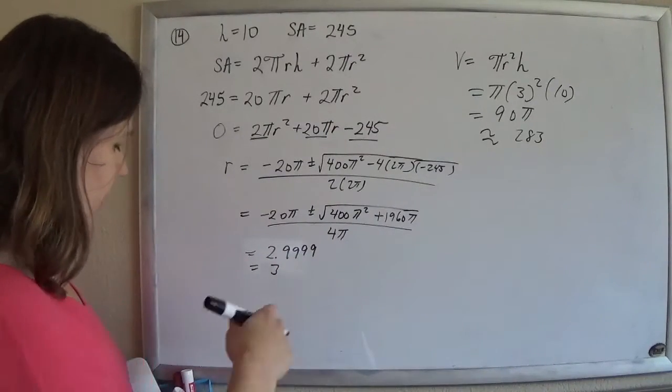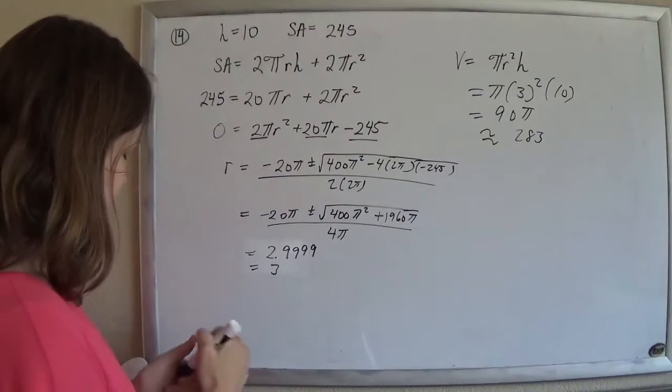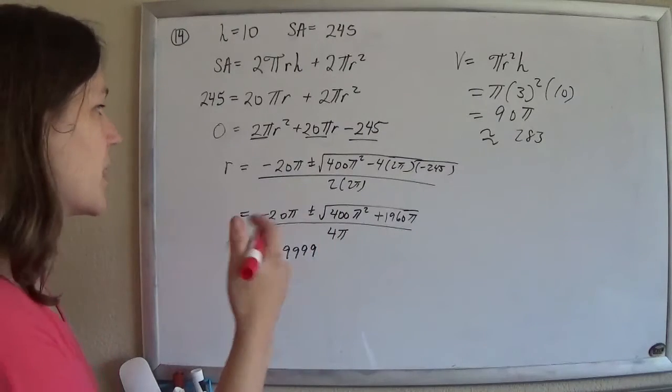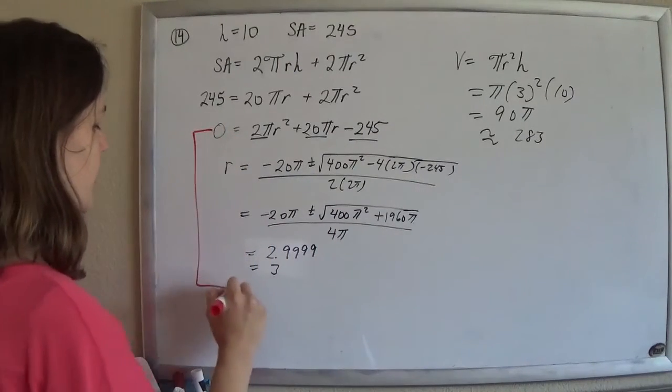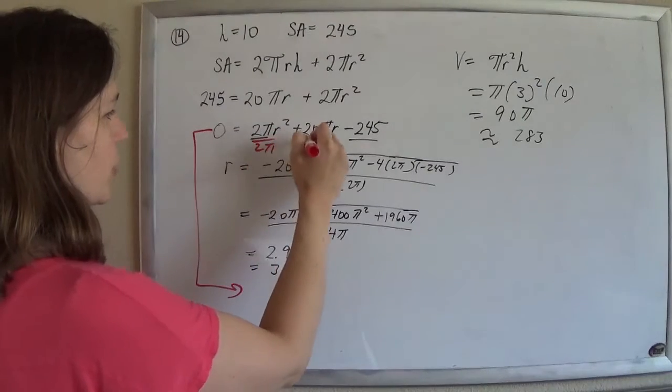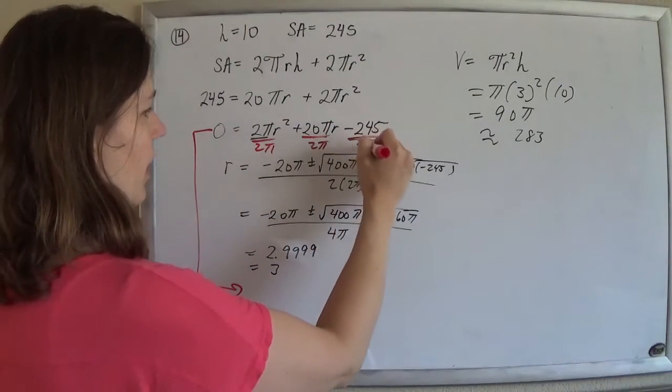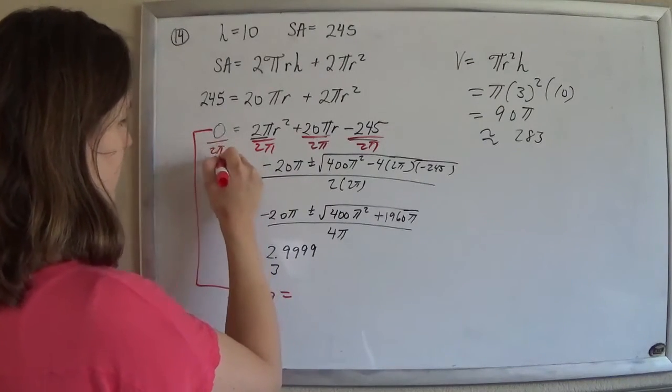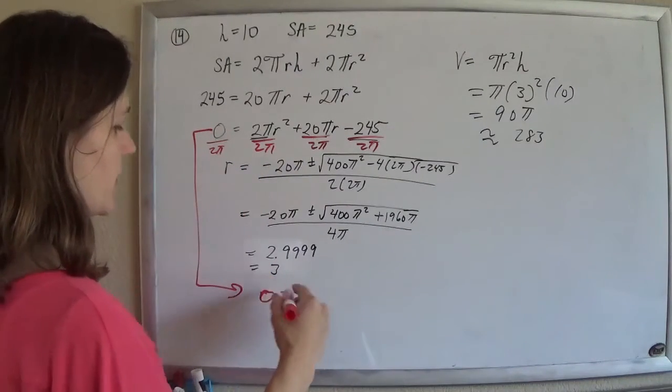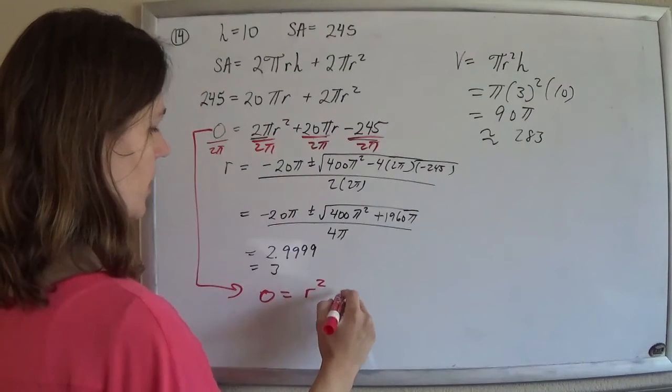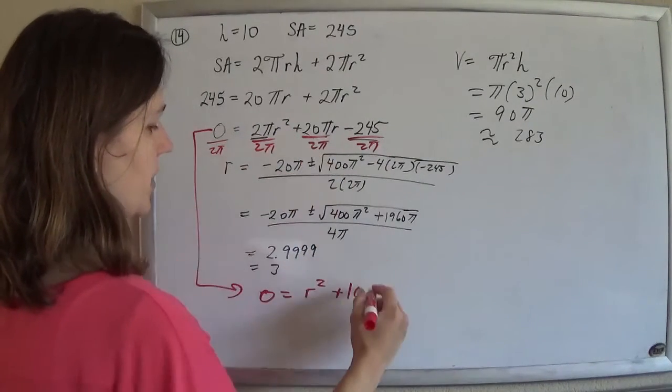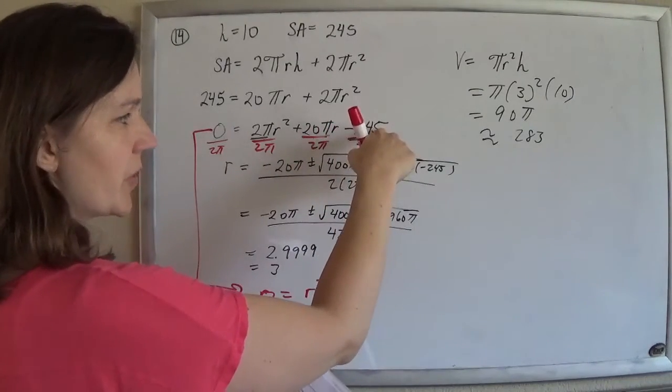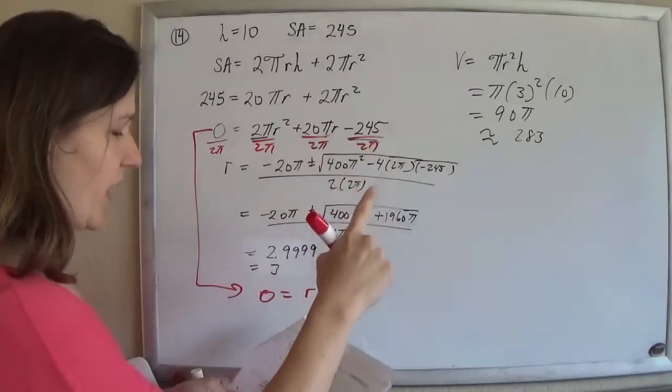The way they do it, they rigged it. Because they said approximately in the beginning, so they let you take some liberties, and they divide this whole thing by 2 pi. And so you get that 0 equals, and this side as well. So 0 divided by 2 pi is still 0. So 0 equals r squared plus 20 divided by 2 is 10 r, and the pi is canceled. And then you still kind of do 245 divided by 2 pi on your calculator.